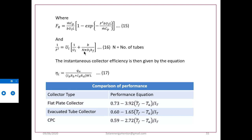The collector efficiency factor F' is evaluated using: 1/F' = U_L × [1/U_L + b/(n π d_i h_f)], where n is the number of tubes in the absorber, d_i is the inner diameter of the absorber tube, and h_f is the convective heat transfer coefficient from fluid to the tube wall. The instantaneous collector efficiency is useful heat gain divided by solar input, where solar input equals (I_b R_b + I_d R_d) × aperture area W × L, with R_d = (1 + cos β)/2.